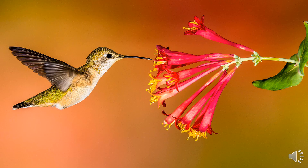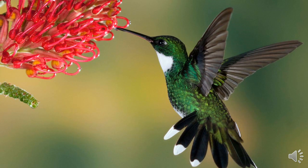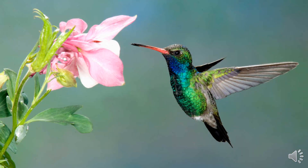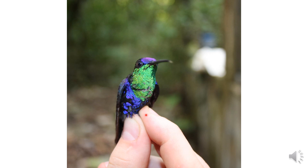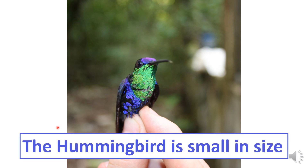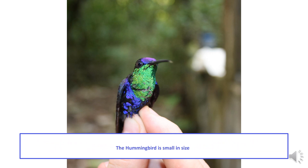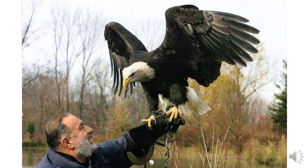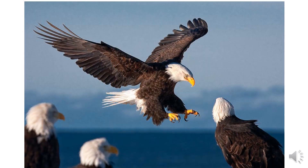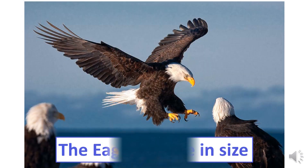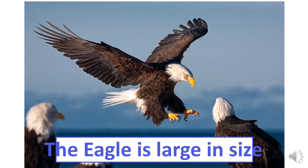Now, look at this beautiful bird. It is actually very small — look how beautiful it is, and how small. It is the size of your finger. So this bird, we call the hummingbird. The hummingbird is small in size, very small. Now, how about this bird? This is the eagle. It is very huge and big. So the eagle is large in size.